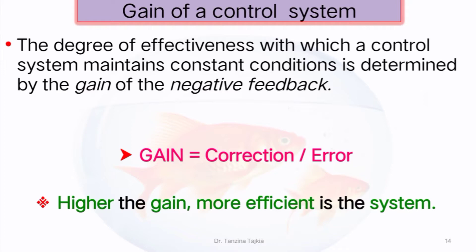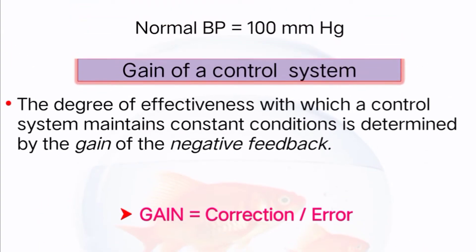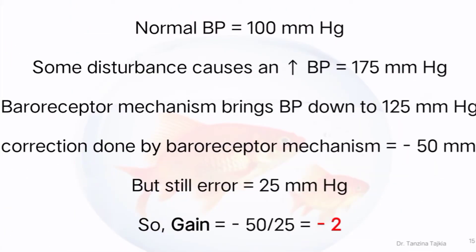Gain is calculated as: Gain = Correction divided by Error. Higher the gain, more efficient is the system. For example, when we measure the blood pressure of a person and find it is 100 mmHg (normal), if some disturbance occurs and blood pressure increases to 175 mmHg, the baroreceptor mechanism decreases blood pressure towards normal, to about 125 mmHg. The correction is −50 mmHg and the remaining error is 25 mmHg. So Gain = −50 / 25 = −2.